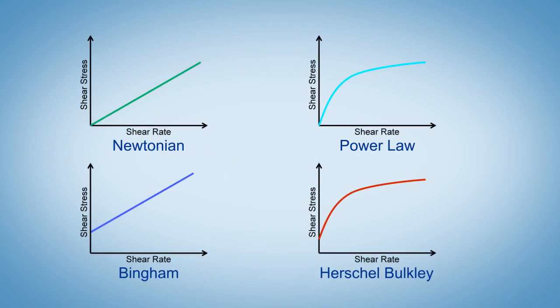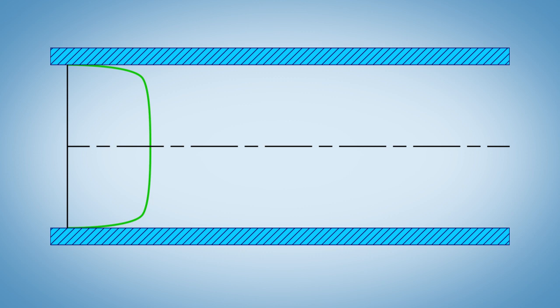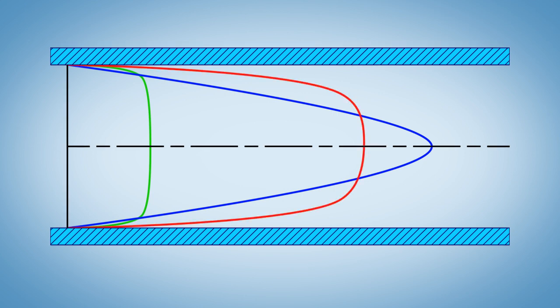These four rheology models describe fluid behaviors. As the flow rate increases, the velocity profile progresses from plug to laminar and eventually to turbulent flow. Both plug and turbulent flow have flat velocity profiles which help the displacement.